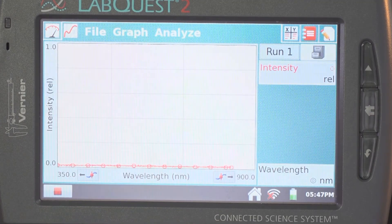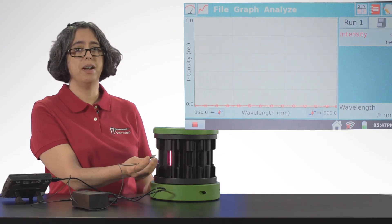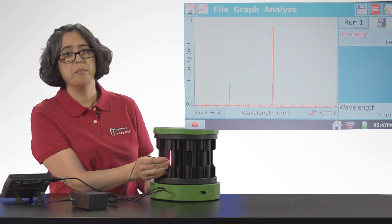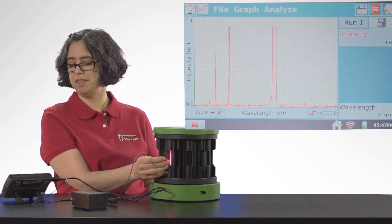Tap collect to start taking measurements, then position the other end of the fiber at the gas spectrum tube and manipulate the position until you see a good set of data.